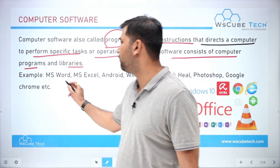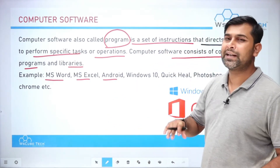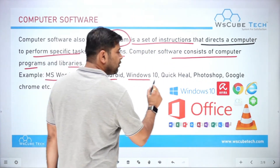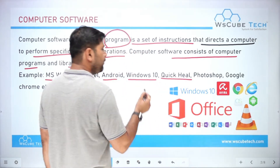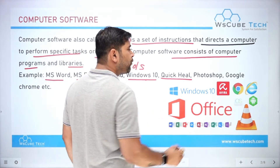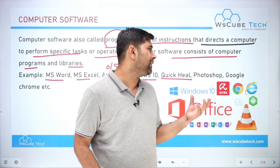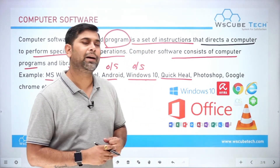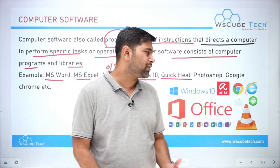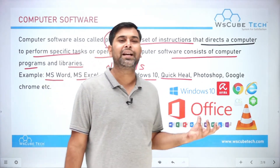Some examples of software include MS Word, MS Excel, and Android. Android is an operating system. Microsoft Word and Microsoft Excel are application software. Windows 10 is also an operating system. Quick Heal is antivirus software. Photoshop is used for photo editing and is an application software. You also have Google Chrome, iOS, Internet Explorer, and Avira. These are all different types of software.